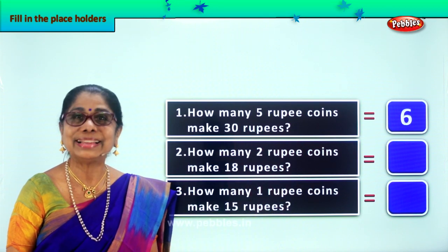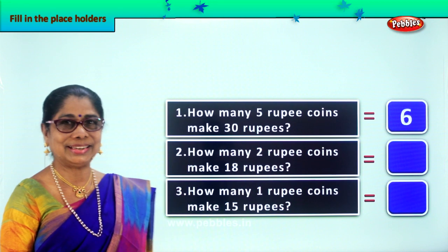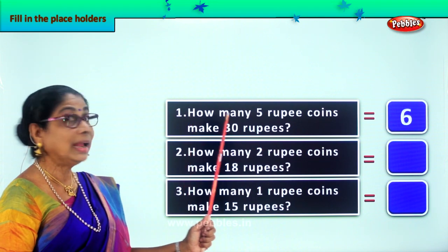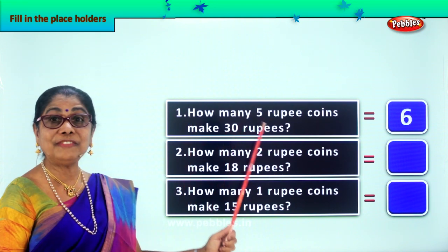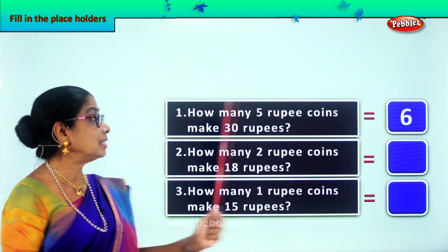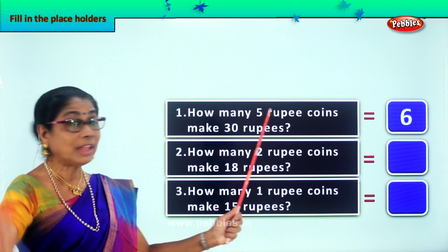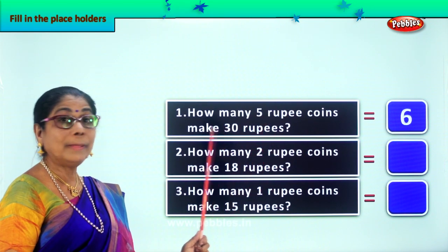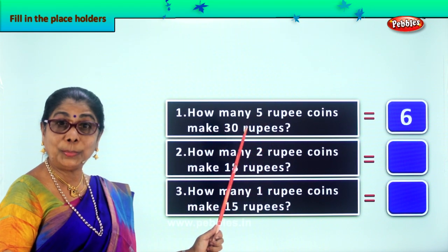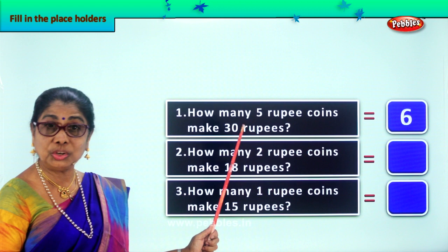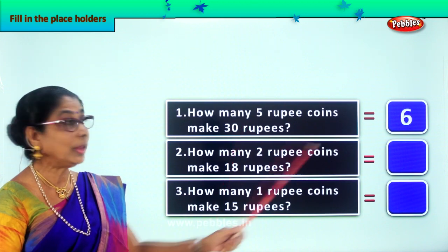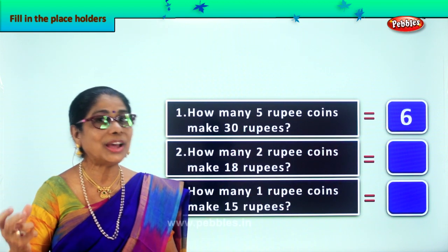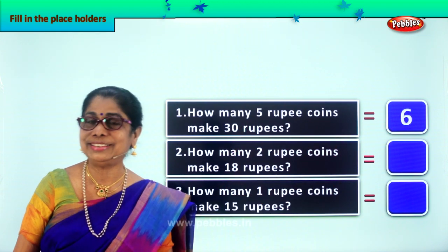Yes? Good. So we learnt to read and find out the answer. How many 5-rupee coins make 30 rupees? In 30 rupees, we have 6 five-rupee coins. Good. Let's take the second sum.